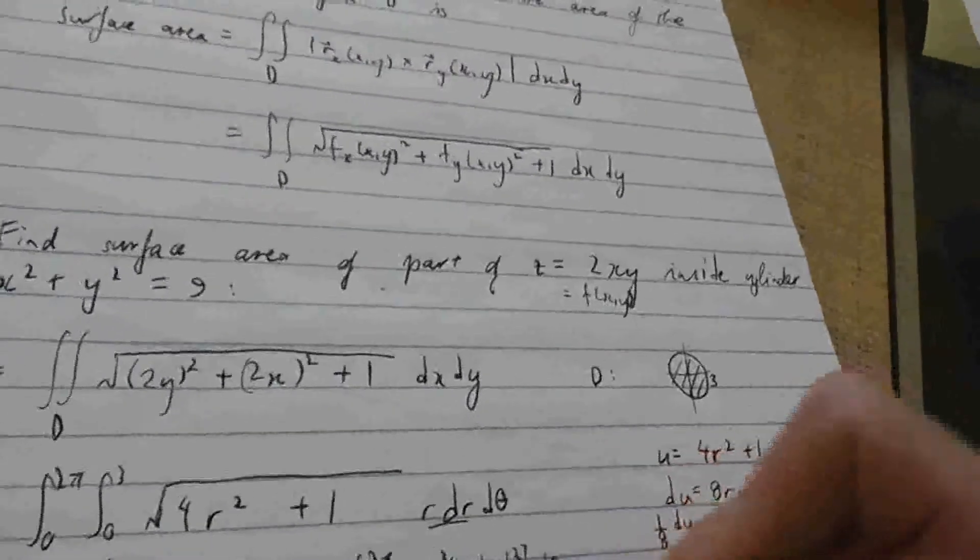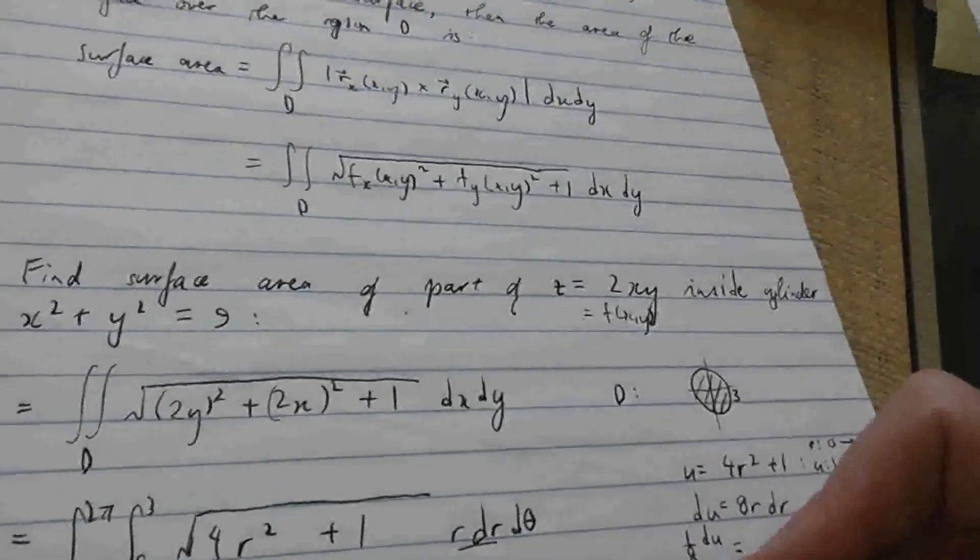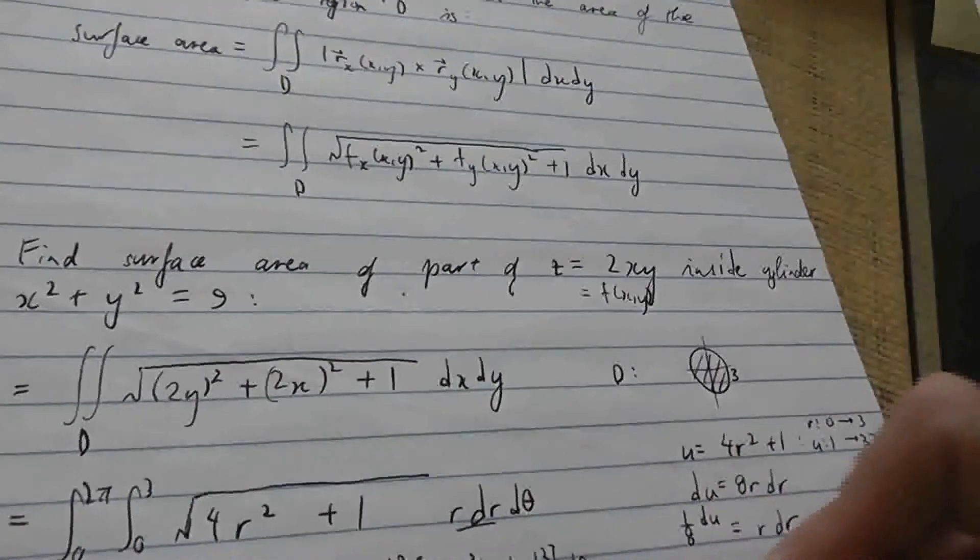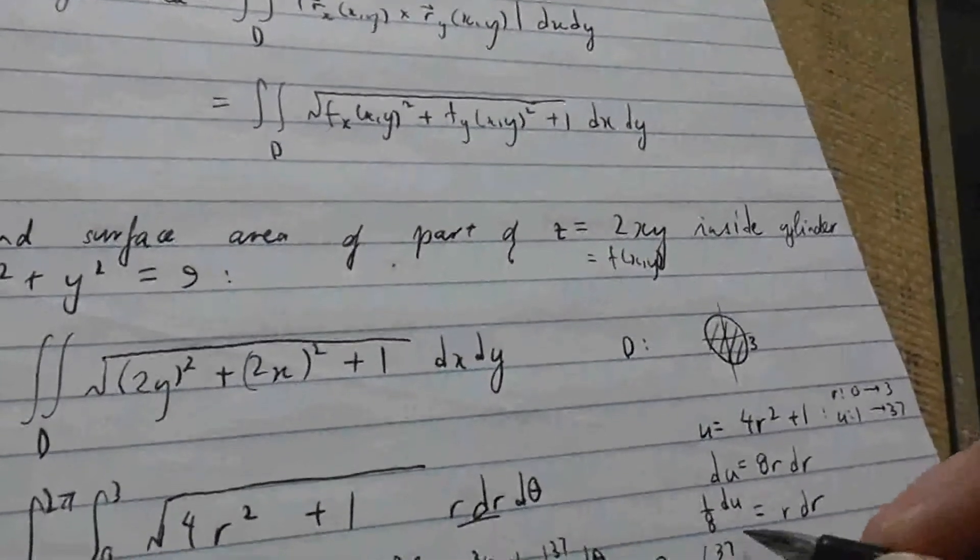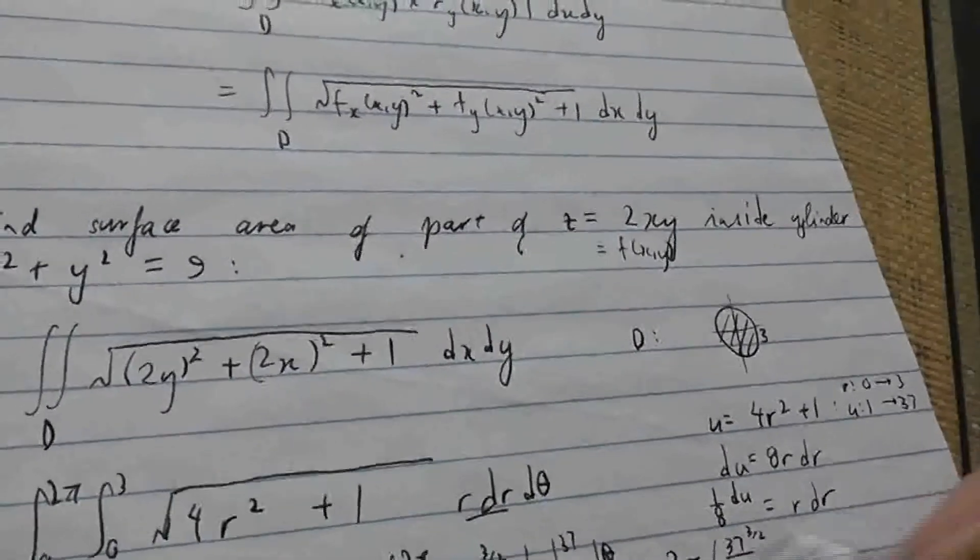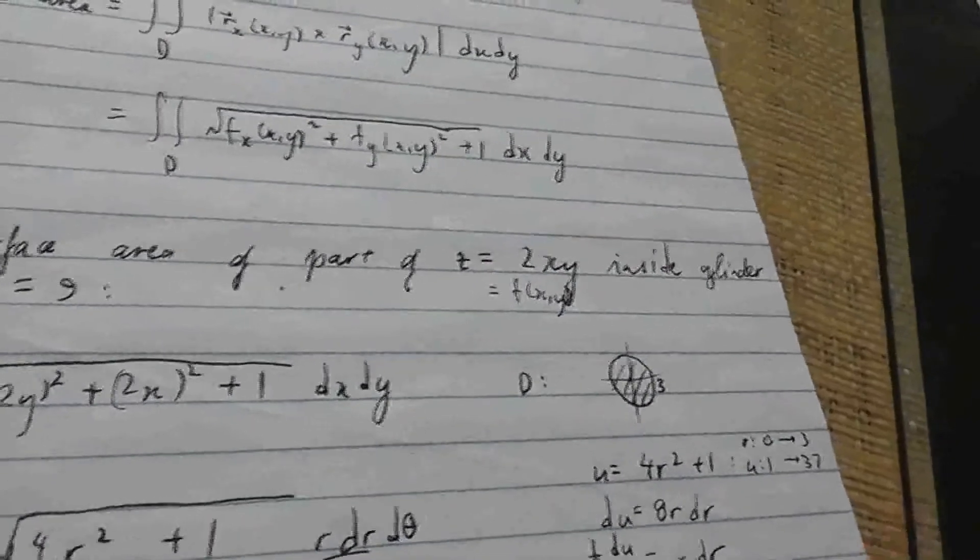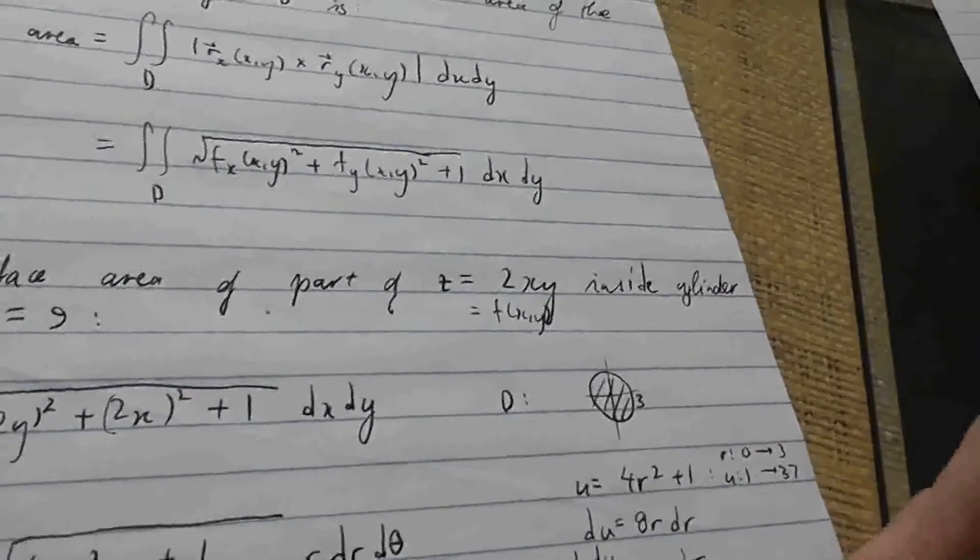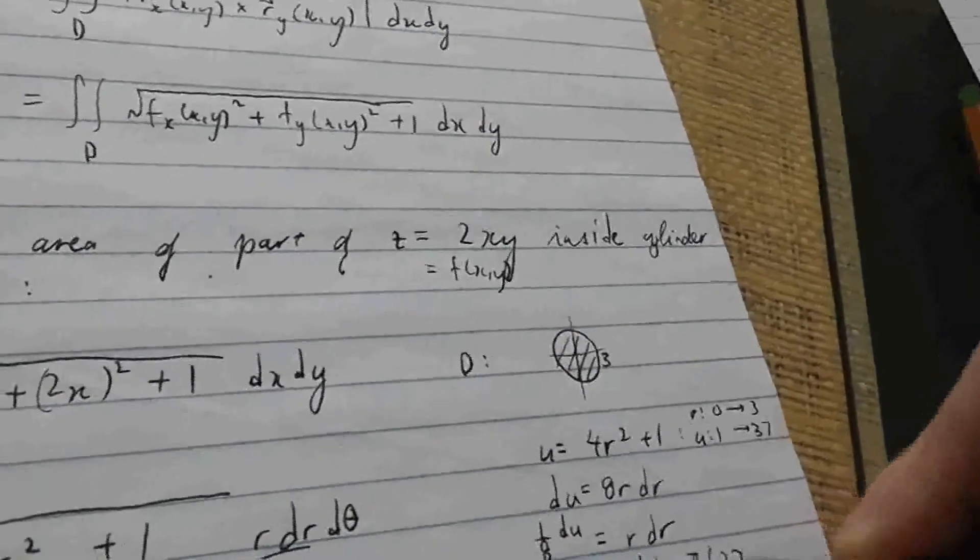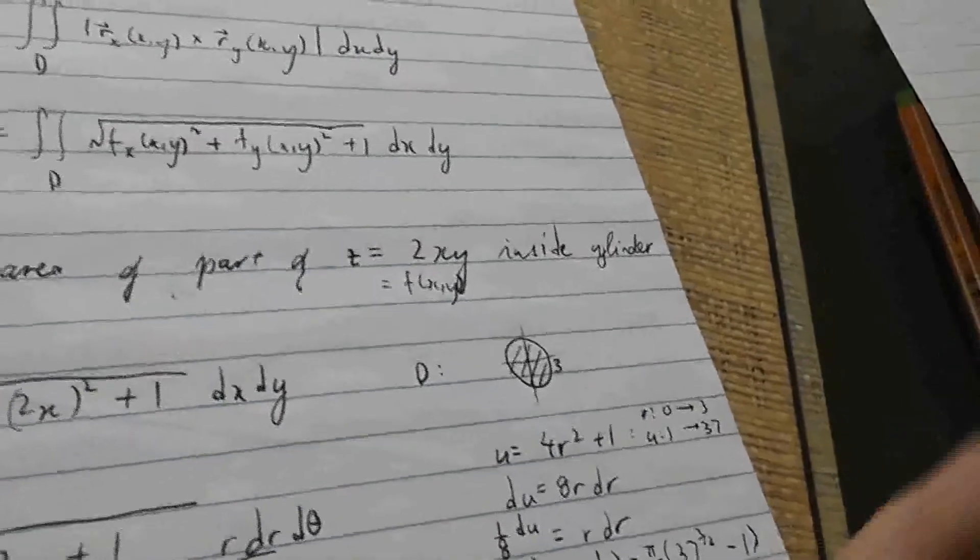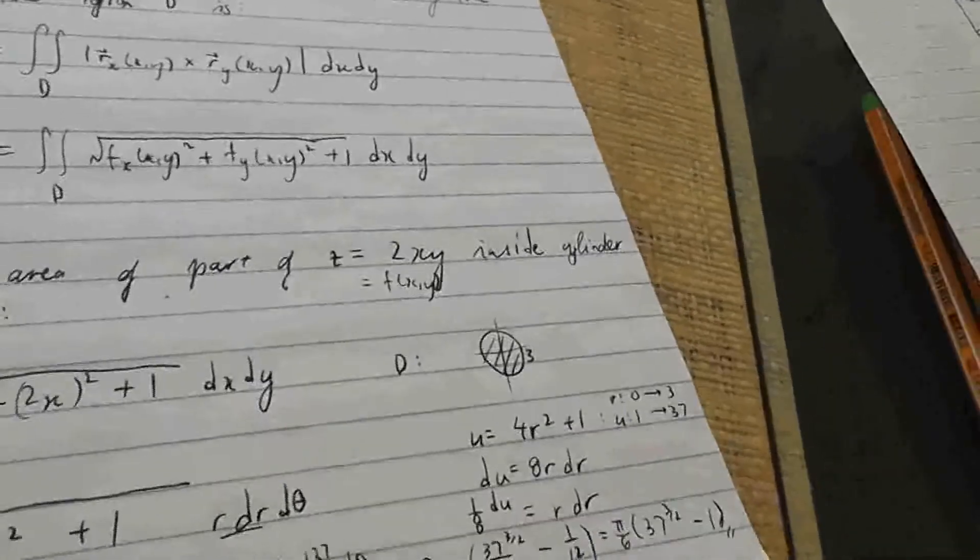So once we plug this in, this is independent of theta. So you just get a number. And when you find the anti-derivative of that, it will just be that number times theta. And then theta will be valued between 2 pi and 0. So this just amounts to multiplying by 2 pi times this number you get. So you'll get 37 to the 3 halves over 3 times, and then 2 will divide out here to give you 4. Minus 1 over 12. And that's the answer. So I mean, 3 times 4 is 12. Well, we could divide out the 2, so let's just do that. So we get pi over 6 times 37 to the 3 halves minus 1. Because here we have 12 in the denominator in both terms. We could bring it out front and divide by 2.